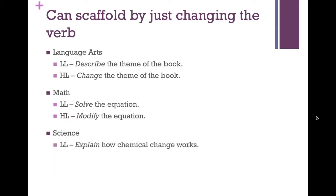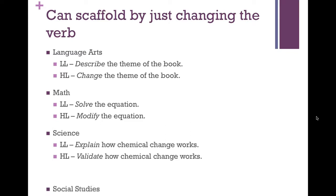When it comes to science, if students explain how chemical change works, they're simply showing an understanding. But if you ask them to validate — to justify, to make an argument for why — then they're using that evaluating level of thinking, thinking at a higher level.